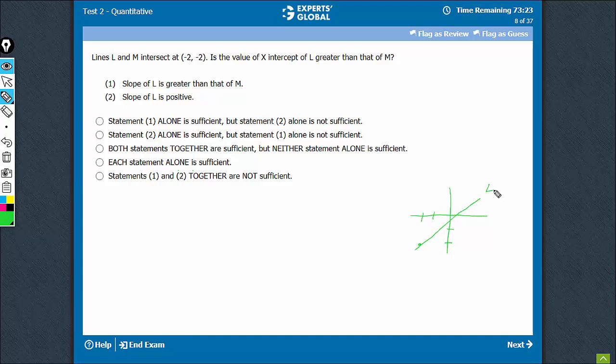So if this is L, this is steeper than M. In this case, the x-intercept of M is greater and the answer is no, that x-intercept of L is not greater than that of M.